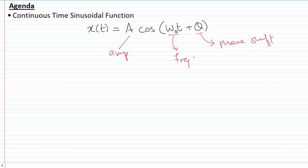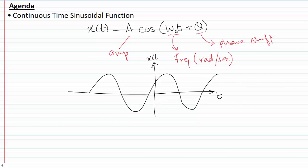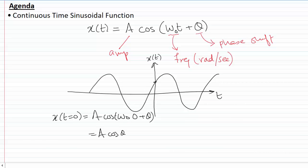This ω₀ frequency has units of radians per second. If I draw the plot of the sinusoidal function, it looks something like this — that is my sinusoidal function x(t). The amplitude at the instant when t = 0 is x(0) = A·cos(ω₀·0 + θ) = A·cos(θ), so the amplitude at t = 0 is A·cos(θ).